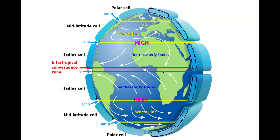Now for us to understand what's going on in Malawi, we need to start considering where it is in the world. Malawi sits in the southern hemisphere, as we saw last lesson, in this space here. So normally its weather is governed by the southern Hadley cell.